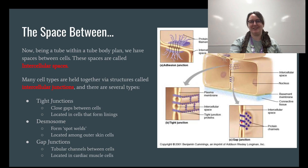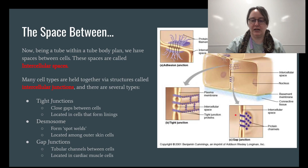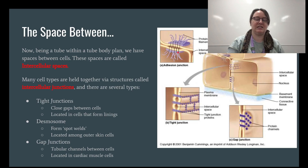Not only do gap junctions weld the cells together, they also make it so chemical messages between the two cells travel extremely quickly. To summarize: gap junctions are protein channels; tight junctions are kind of like rivets without channels; and desmosomes are also known as adhesion junctions — they have protein filaments that stitch the cells together and they're easy to break apart.